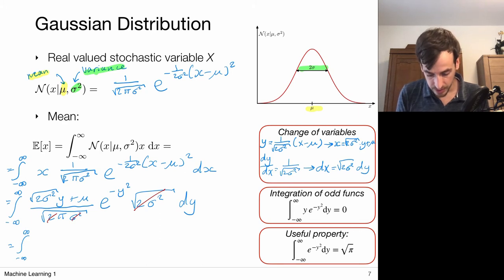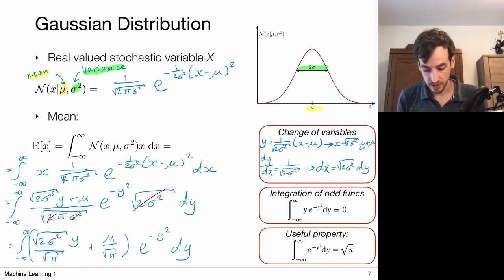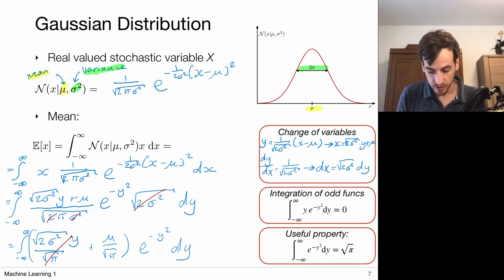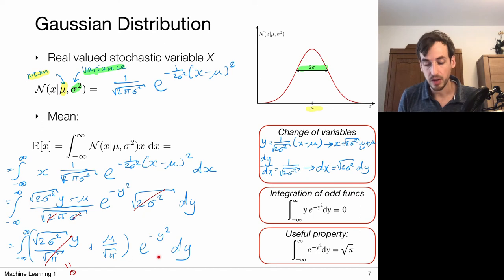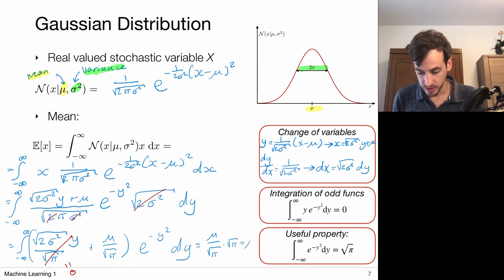After plugging in and cleaning up, we get the integral of two components. One is y times the exponential of minus y squared, which is an odd function, and the other involves the constant mu. We know that integrating an odd function from minus infinity to infinity gives zero — the left part of the domain cancels the positive part — so that term evaluates to zero. We only need to compute the integral of e to the power minus y squared, which evaluates to the square root of pi. That gives us mu divided by the square root of pi, times the square root of pi, which equals mu.